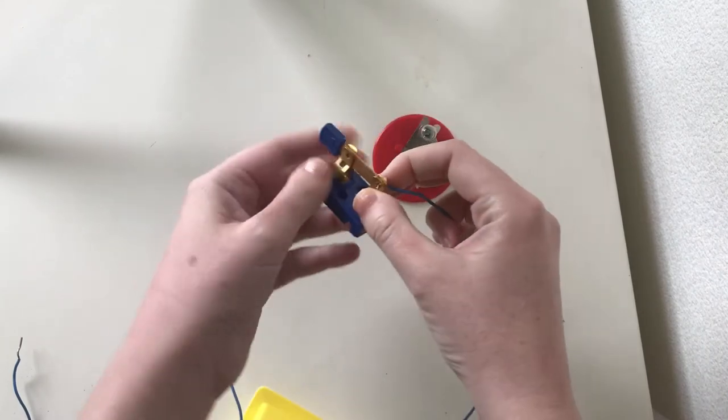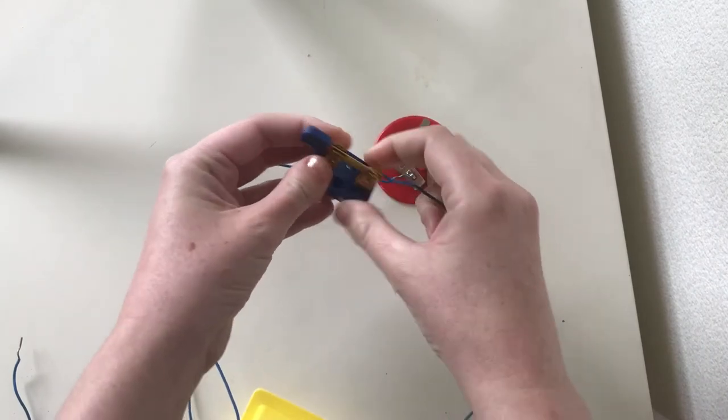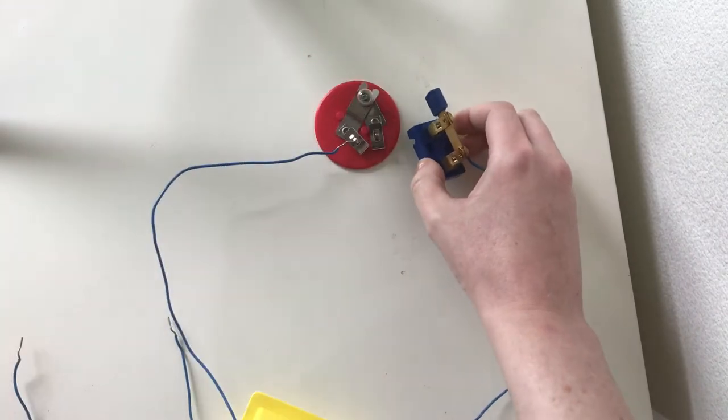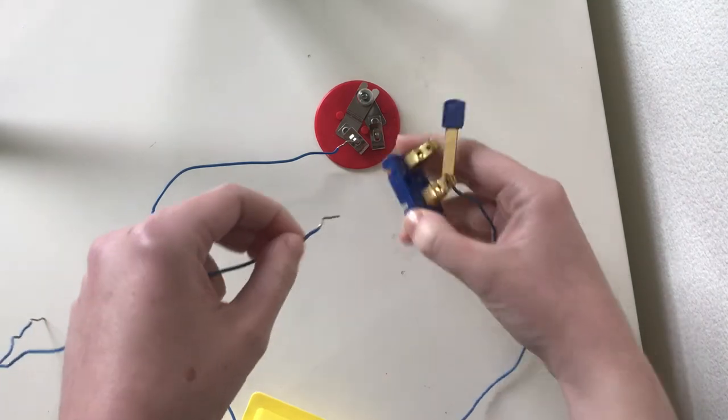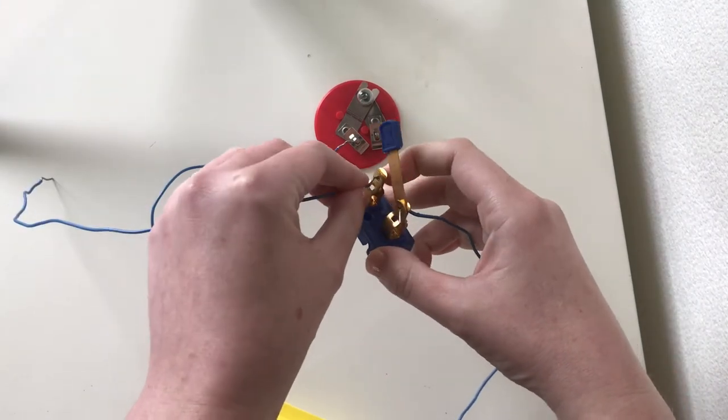My wire is covered in blue plastic, which is an insulator, meaning that electrons don't want to flow through it. So if I connect my wire where it's blue and plasticky to the switch, the electricity won't flow through it and the light won't turn on.